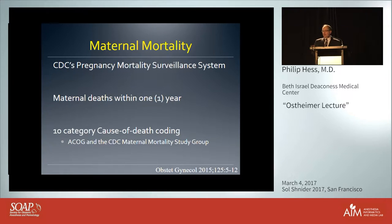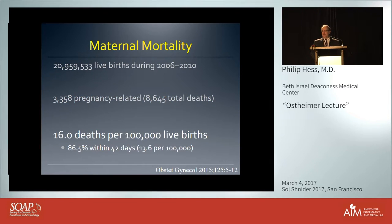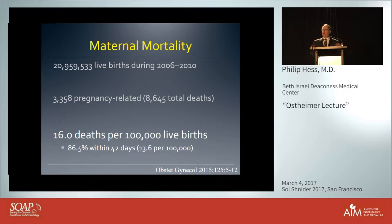There is a 10-category cause of death coding that looks only at pregnancy-related maternal mortality, as opposed to pregnancy-associated, which includes suicide — which John pointed out is the largest cause of death in pregnancy. During that five-year period, there were 21 million births in the United States and 3,300 pregnancy-related deaths, a maternal mortality ratio of about 16 deaths per 100,000 live births. The WHO gives a number closer to 30, due to their fudge factors in altering countries' numbers.